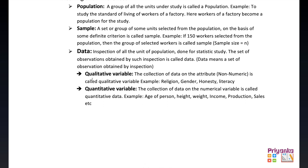There are qualitative variables and quantitative variables. The collection of data on attributes that are non-numerical is called a qualitative variable — for example, religion, gender, honesty, and literacy, which cannot be counted in numbers. The collection of data on numerical variables is called a quantitative variable — for example, age, height, weight, income, production, and sales, which can be counted in numbers.